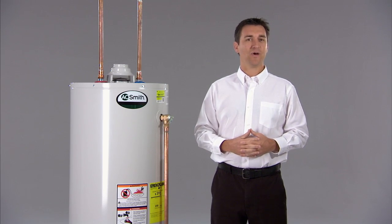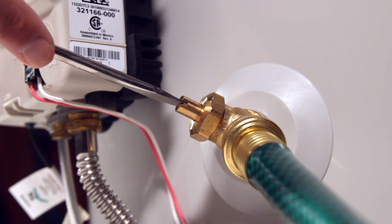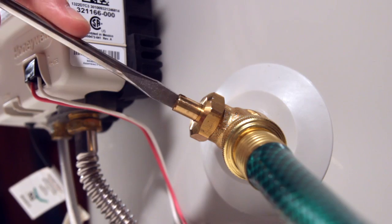Finally, place the other end of the hose in a floor drain and open the valve. Let all the water drain out of the tank.